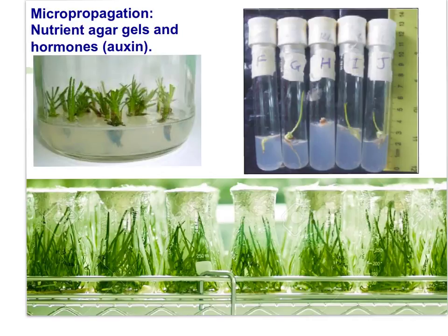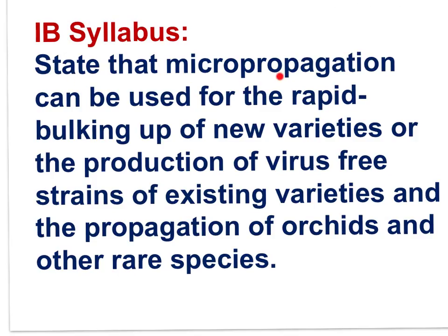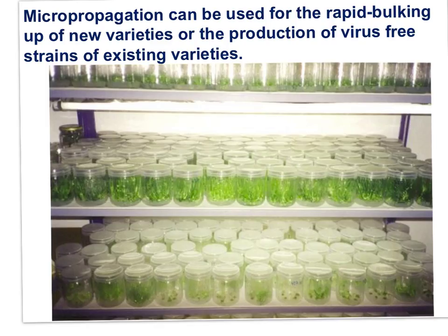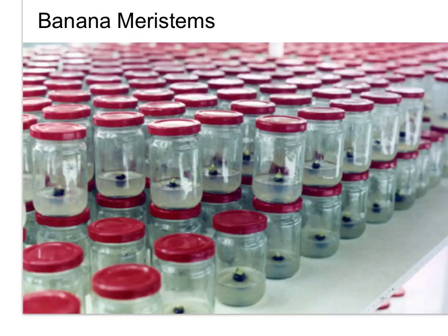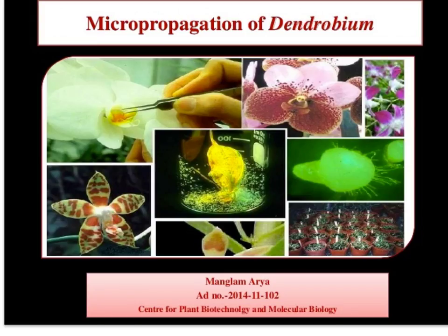New varieties can be generated, and the number of individuals of rare species can be increased. The syllabus statement states that micropropagation can be used for the rapid bulking up of new varieties, the production of virus-free strains of existing varieties, and the propagation of orchids and other rare species. Micropropagation can be used on an industrial scale for all of these purposes.